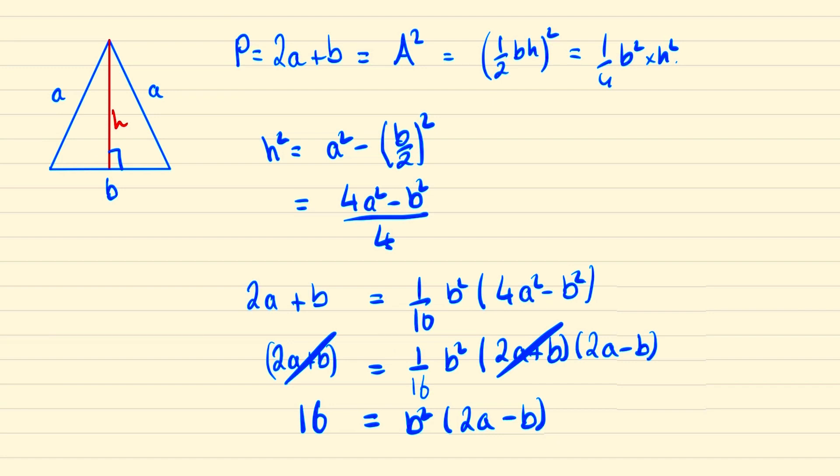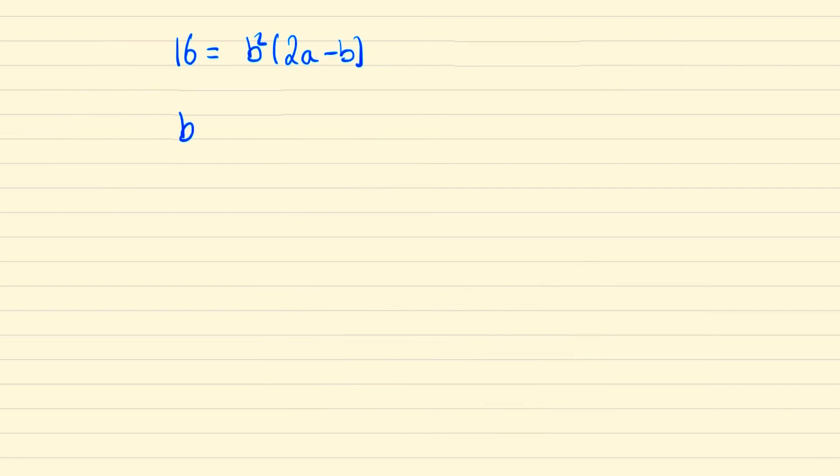At this stage it follows that 2a plus b is an integer, so therefore 2a minus b must also be an integer. Thus we can say that b squared must divide 16 and so b can equal either 1, 2, or 4. Subbing each value back into our equation we find a will equal 17 over 2, 3, or 5 over 2.